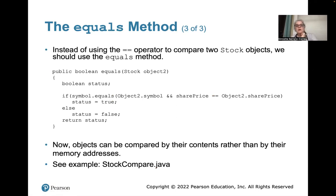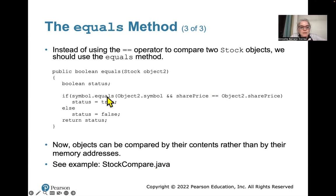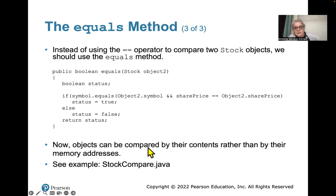Instead of using the == operator to compare two Stock objects, we should use the equals method. When we use the equals method, we're looking at object2.symbol and sharePrice equals object2.sharePrice. So now objects can be compared by their contents rather than by their memory addresses.